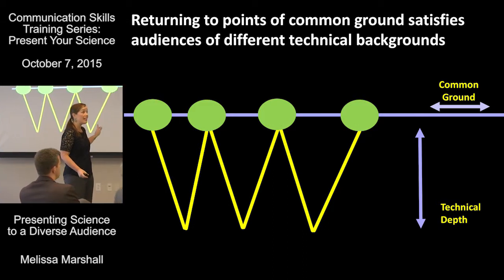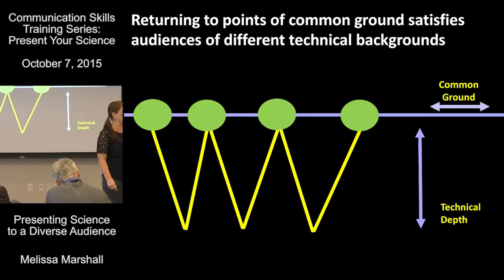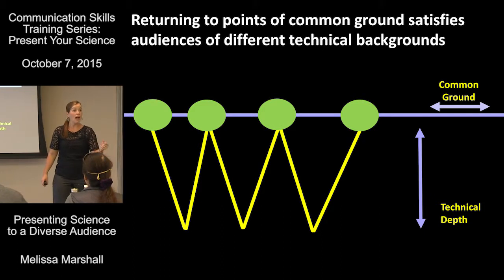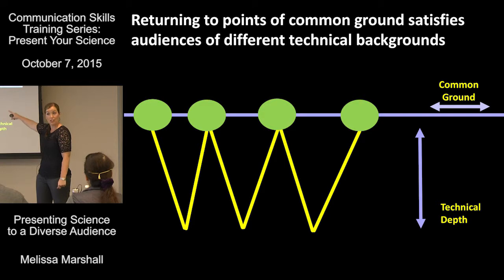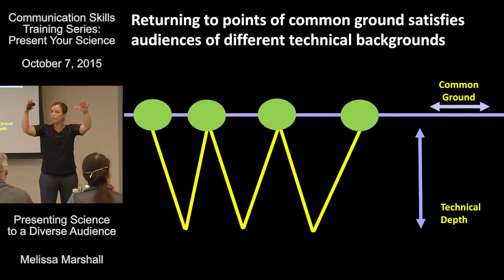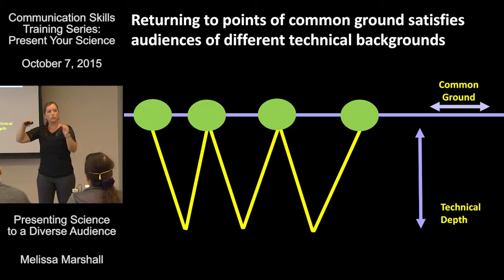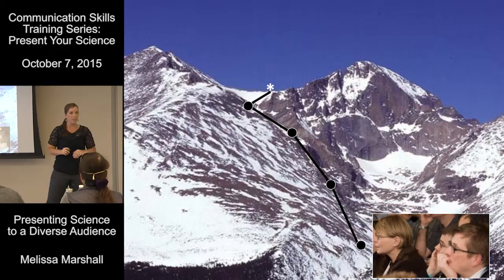My word of advice is that you need to use this strategically and plan it out. This isn't something that happens on the fly. Go through and almost map your presentation: ask yourself, here on slide five, this is where I'm going to come up to a point of common ground; I'm going to take another dive on slide six and make sure at the end I come back up to a point of common ground. Start to think about that as you go through your presentation, and this will help you manage a diverse audience.